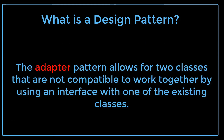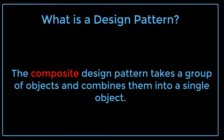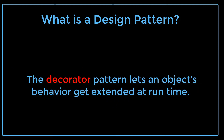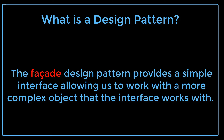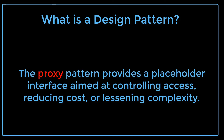The Adapter pattern allows for two classes that are not compatible to work together by using an interface with one of the existing classes. The Bridge pattern decouples two classes so that they can vary independently. The Composite design pattern takes a group of objects and combines them into a single object. The Decorator pattern lets an object's behavior get extended at runtime. The Facade design pattern provides a simple interface allowing us to work with a more complex object. The Flyweight pattern reduces the overhead of creating complex object models. The Proxy pattern provides a placeholder interface aimed at controlling access, reducing cost, or lessening complexity.